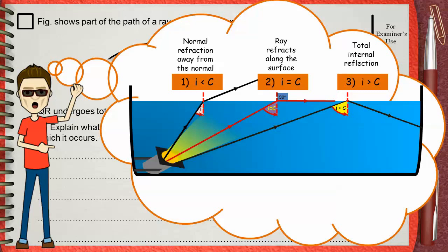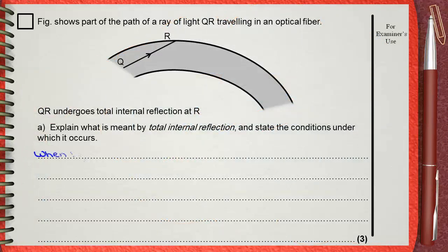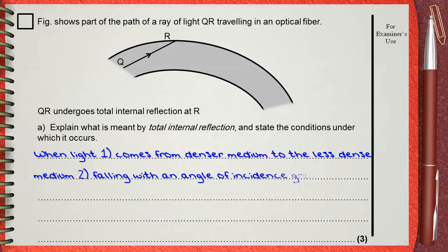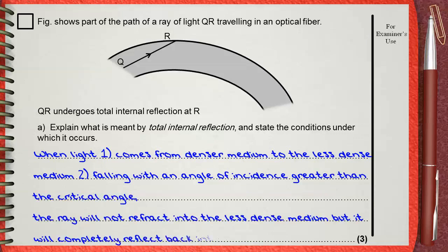So we can answer this question as: when light, number one, comes from denser medium to the less dense medium, this is the first condition. Number two, the second condition, falling with an angle of incidence that is greater than the critical angle, the ray will not refract into the less dense medium but it will completely reflect back into the more dense medium.